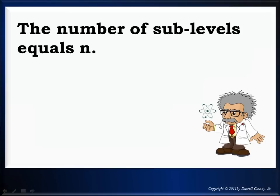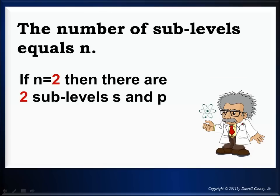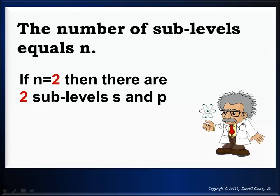You need to know that the number of sublevels equals n. And if you've done quantum numbers lesson you know that. So if n equals 2 there are 2 sublevels s and p. If n equals 3 there are 3 sublevels s, p and d and so on. And that was all covered in quantum numbers.